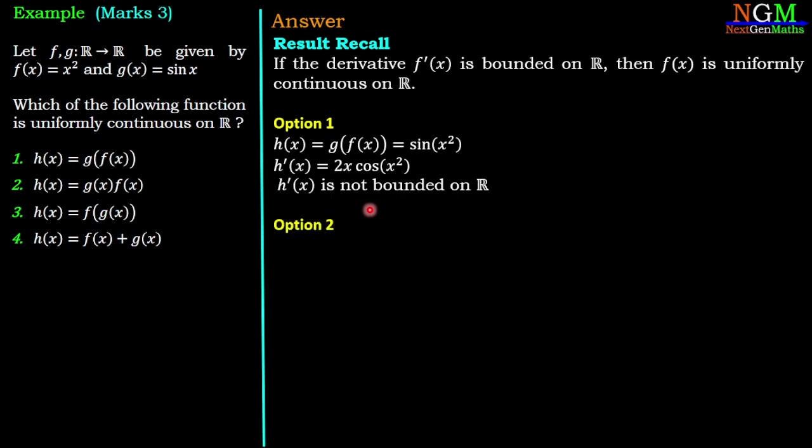Now option number two which is h(x) = g(x)·f(x) = x² sin x. Take the derivative of h(x). So h'(x) = 2x sin x + x² cos x. It is also not a bounded function on R.